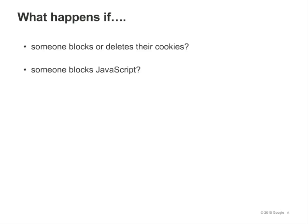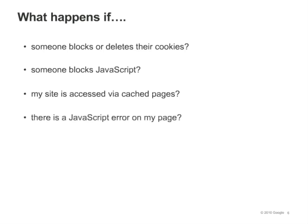A much less common scenario is that a visitor to your site has disabled JavaScript on his or her browser. A visitor who disables JavaScript won't be tracked, since the Google Analytics tracking code cannot be executed. Cached pages are saved on a visitor's local machine and are not served by the web server; Google Analytics will still track visits to cached pages as long as the visitor is connected to the Internet. JavaScript errors occur when an element of a web page's script contains an error or fails to execute correctly. If an error occurs before the Google Analytics tracking code is executed, the visit to the page won't be tracked. In general, no reporting tool can ever be 100% accurate. You'll get the most out of web analytics if you focus on trends — knowing that 20% more visitors converted following a marketing campaign is more powerful than knowing that exactly 10 people visited your site today.